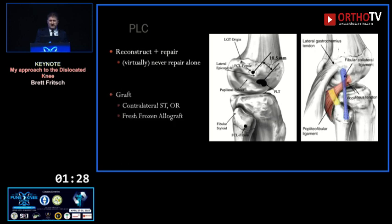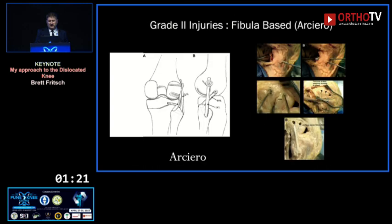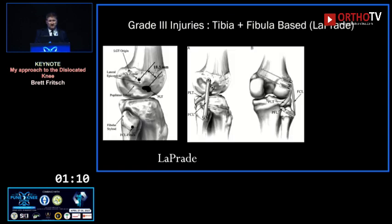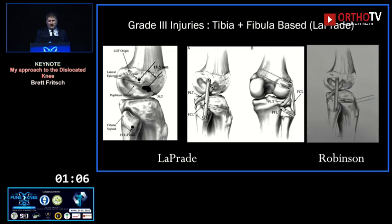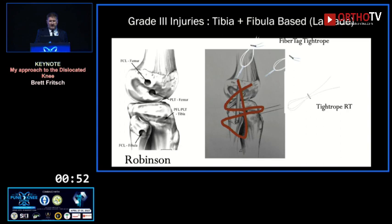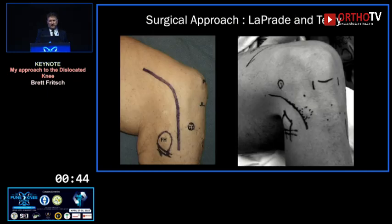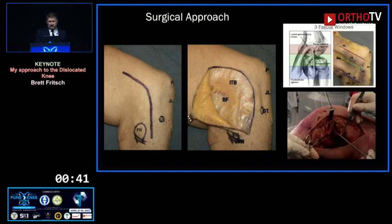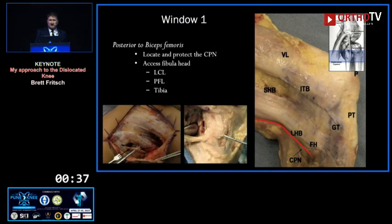For the posterolateral corner it's mostly reconstruction augmenting a repair of the three main structures. I tend to use either contralateral semitendinosus or a fresh-frozen allograft. For a grade 2 injury I do a fibula-based reconstruction as described by Arciero — one tunnel on the fibula and two on the femur — but I add FiberTape so I can adjust the tension. I've struggled with screws for that. For a grade 3, a single soft tissue graft with FiberTape and TightRopes at all fixation points, backed up with screws so I can tension them.